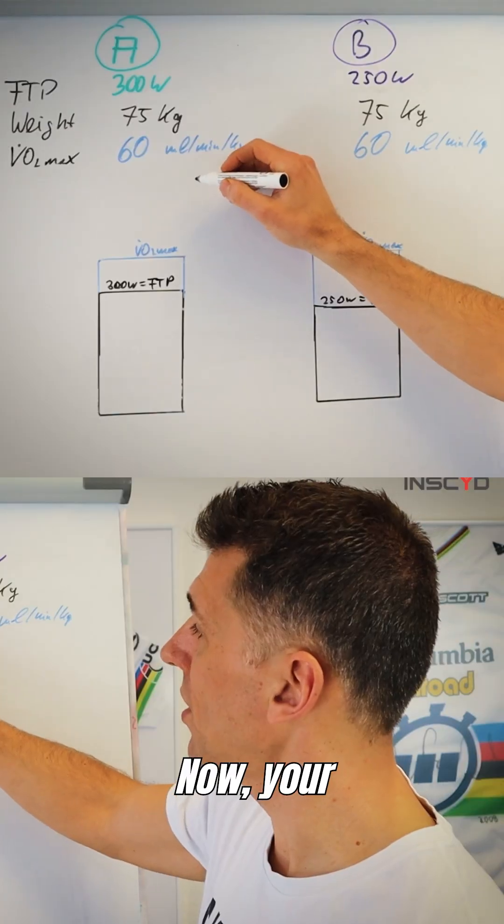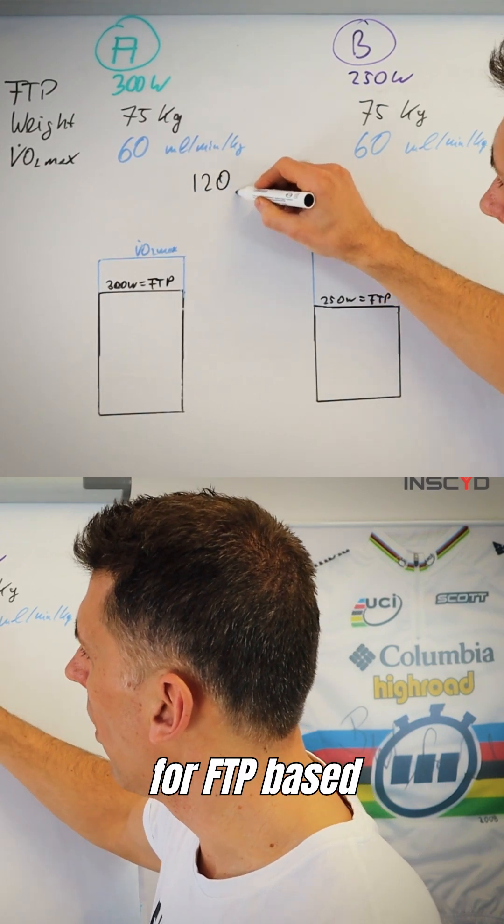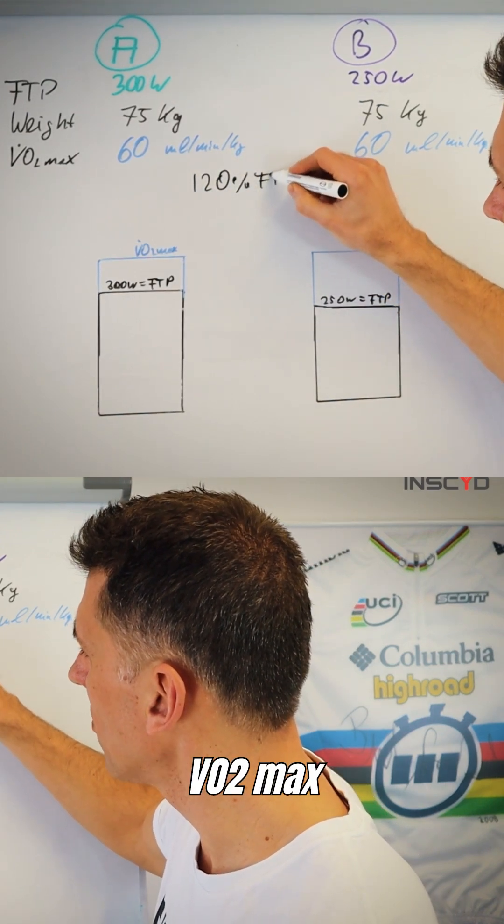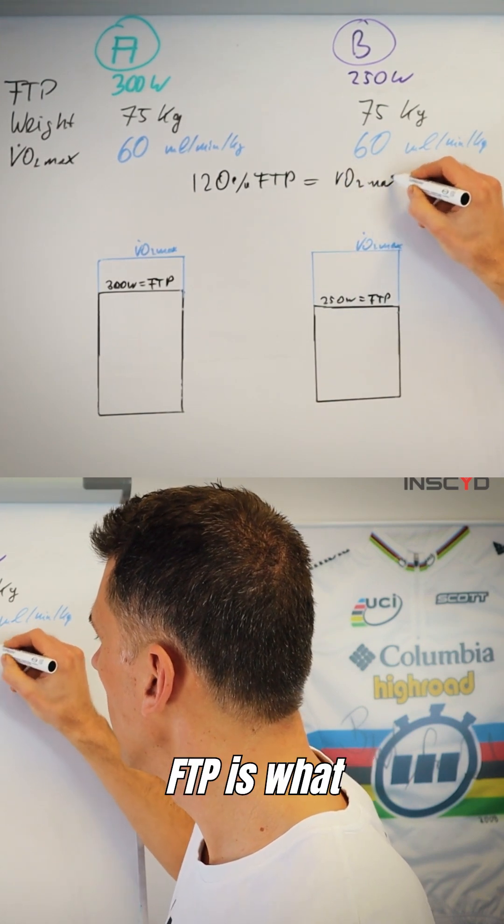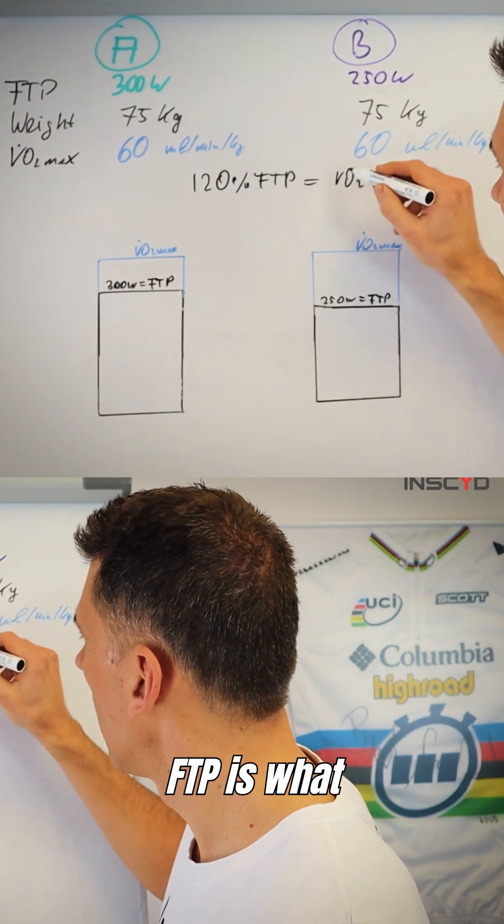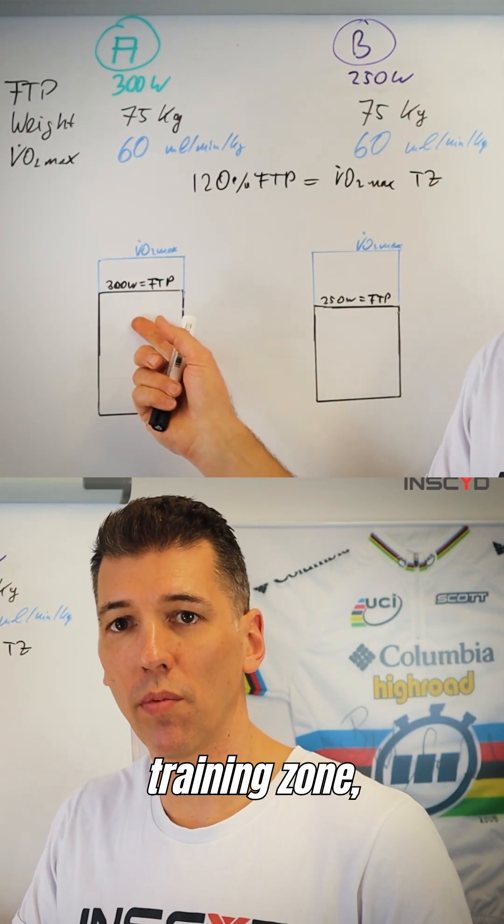Now your literature tells you that your individual training zone for FTP-based VO2max intervals would be approximately 120% of FTP. That's what you use as a VO2max training zone, right?